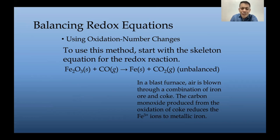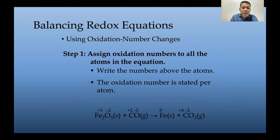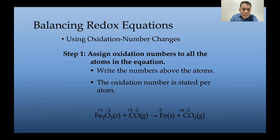In a blast furnace, carbon monoxide produced from the oxidation of coke reduces the iron(III) ions to metallic iron. Step 1: assign oxidation numbers to all atoms. Fe in Fe2O3 is +3; O in Fe2O3 is -2. For CO: C is +2, O is -2. For iron metal (product): Fe is 0 since it is in ground state. For CO2: C is +4 and O is -2 (times 2 subscript gives -4, plus +4 equals zero).